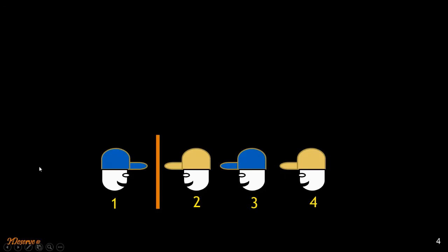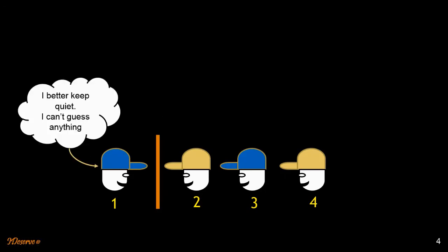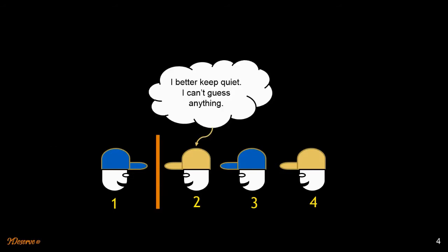Let's see what each prisoner might be thinking. Prisoner one might be thinking, I better keep quiet, I can't guess anything, I can see only the wall. Prisoner two might be thinking the same, he can't guess anything, so he'll keep quiet.